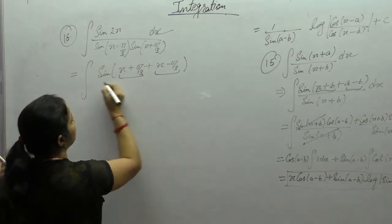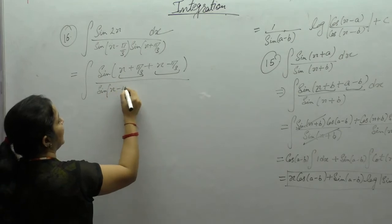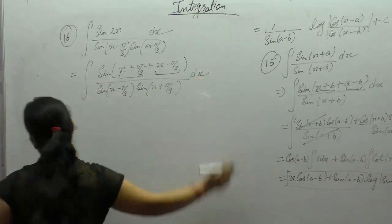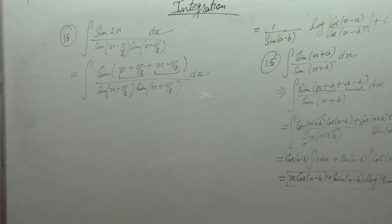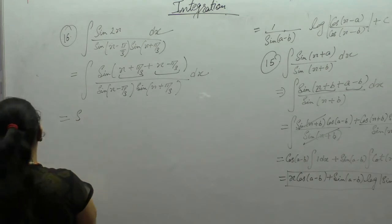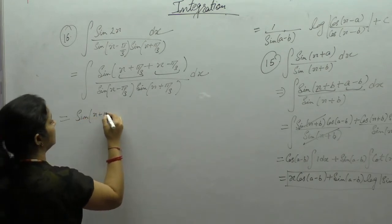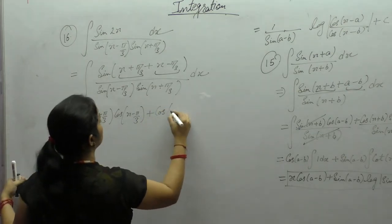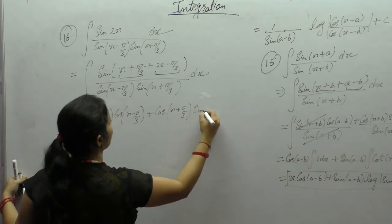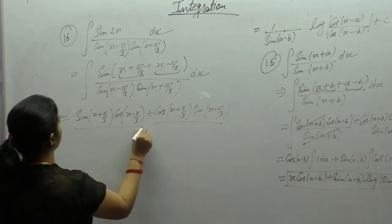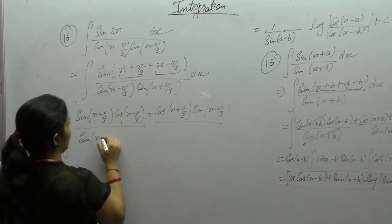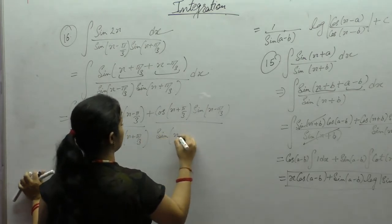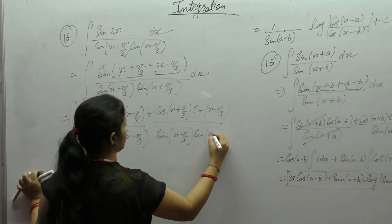Take (x + π/3) as one term and (x - π/3) as another, and apply the formula sin(a+b) = sin a cos b + cos a sin b. In the denominator we have sin(x - π/3)·sin(x + π/3).